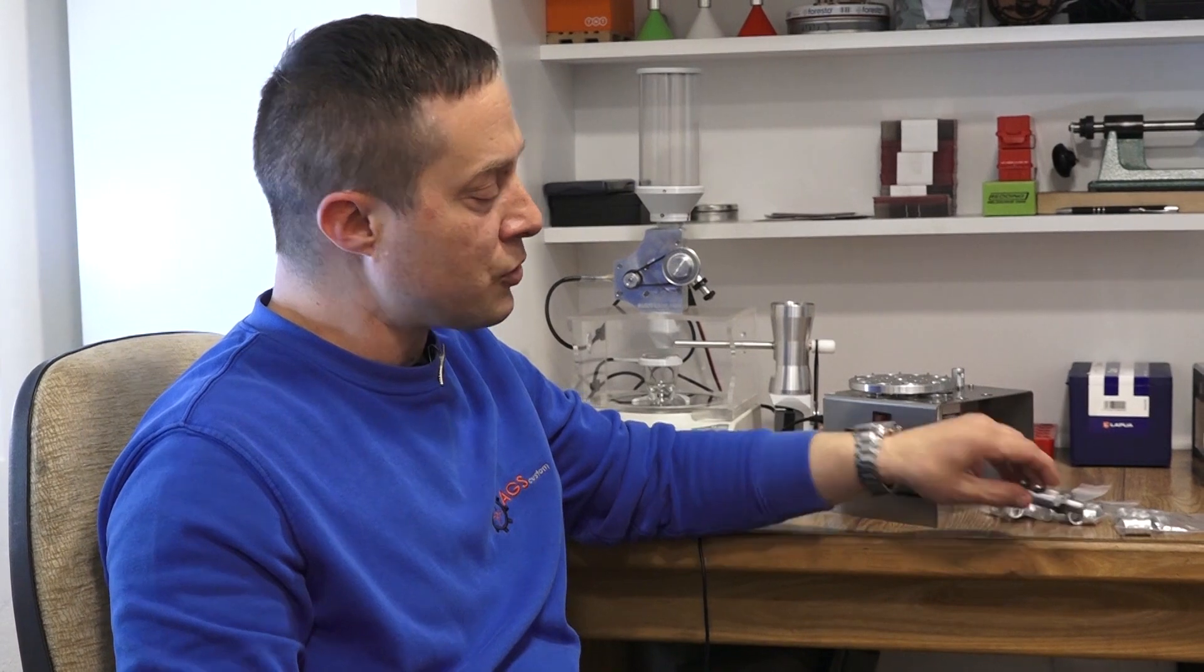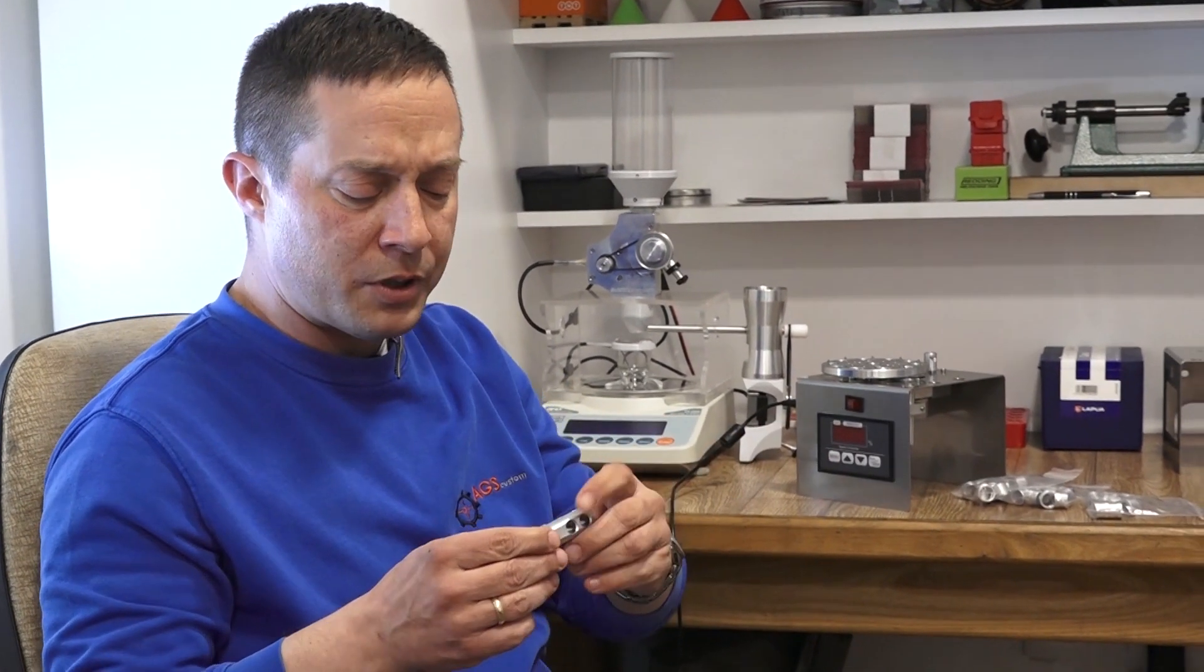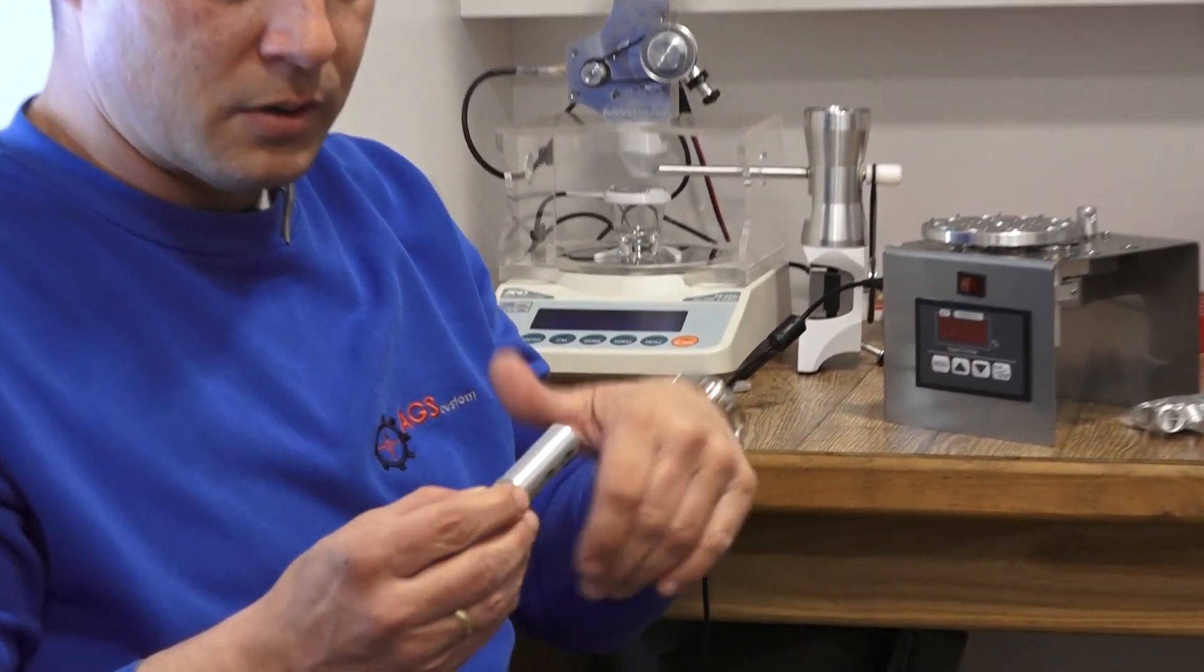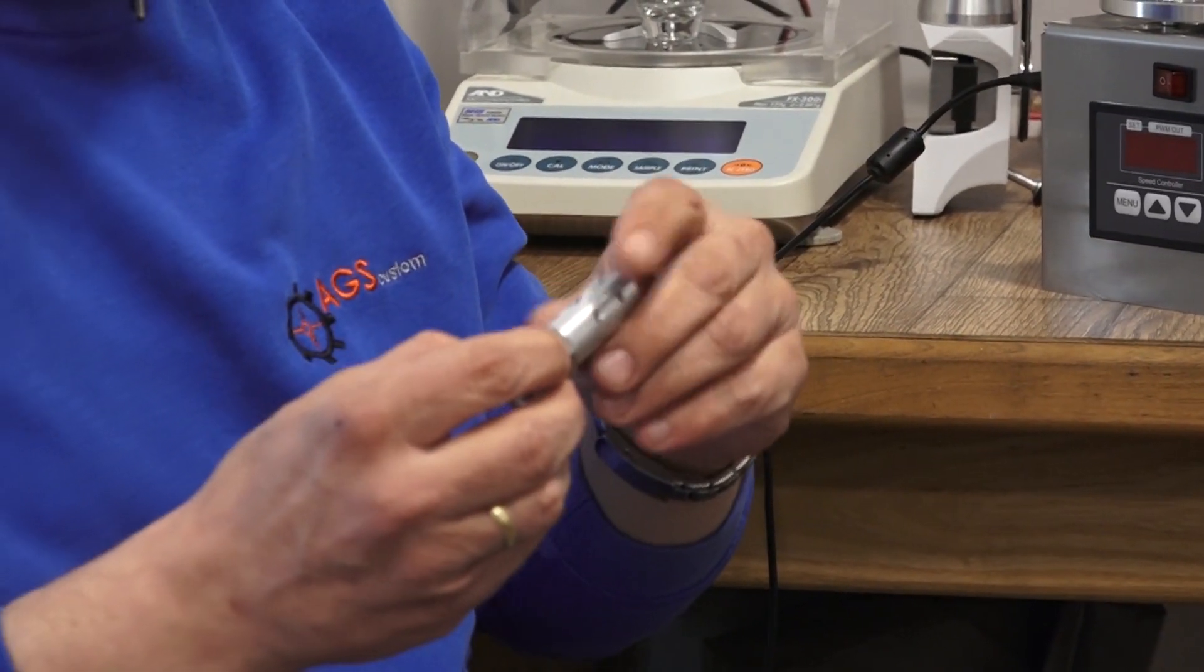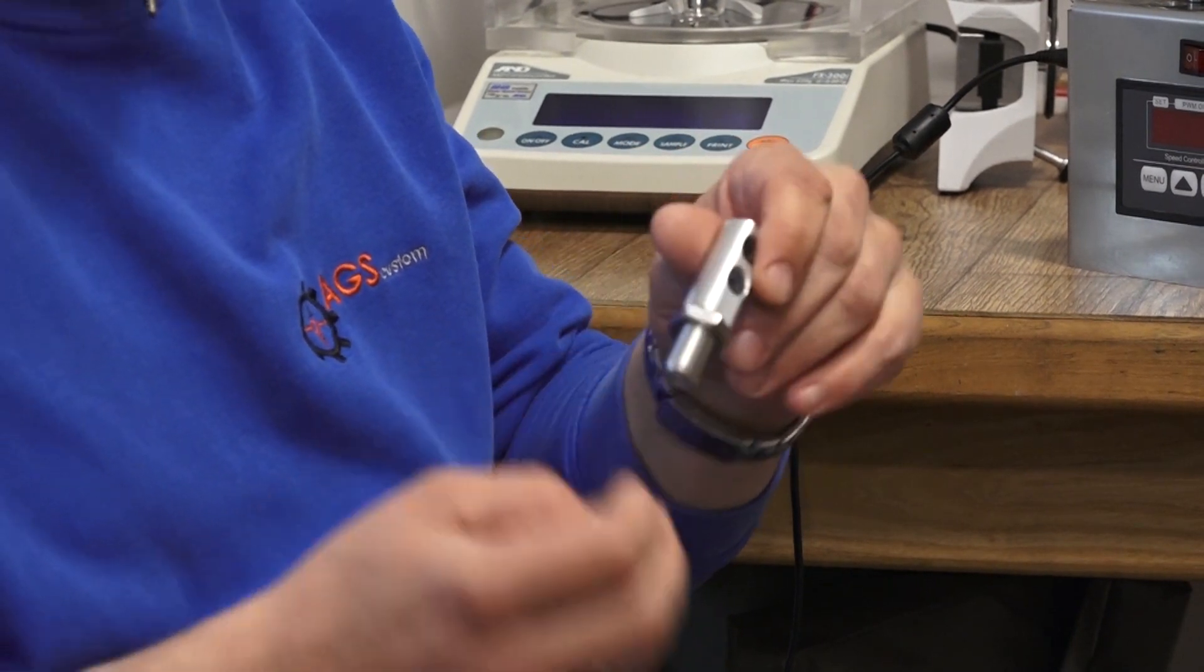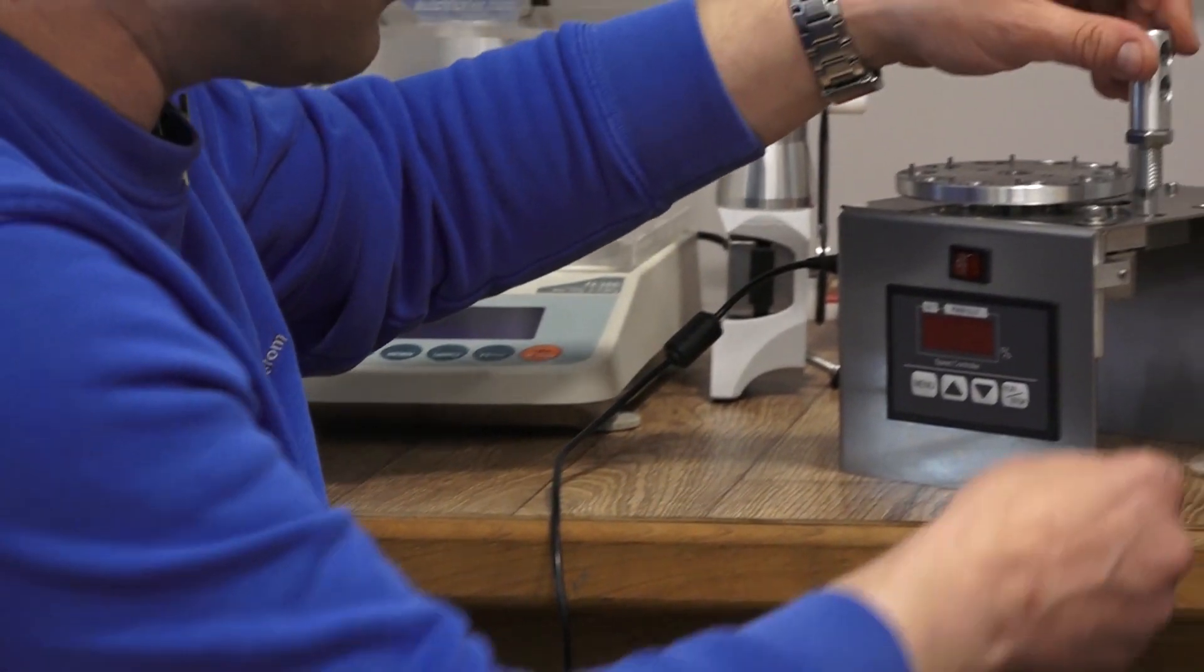So those are the two main differences. Also, we added the Sharpie holder to the unit itself. That's mainly for PRS shooters because they like to mark their brass. It's easier to install. Place it here.